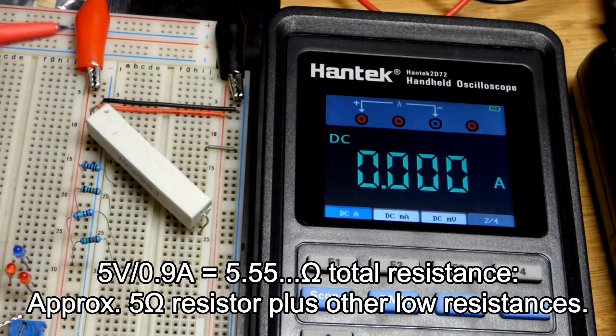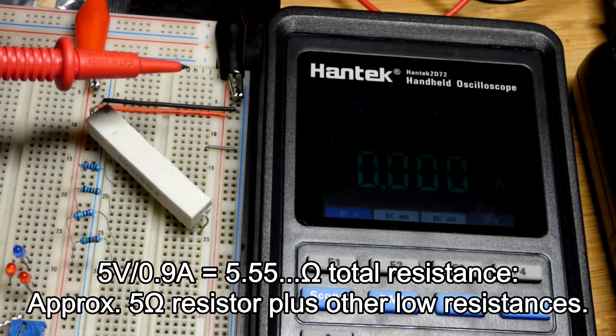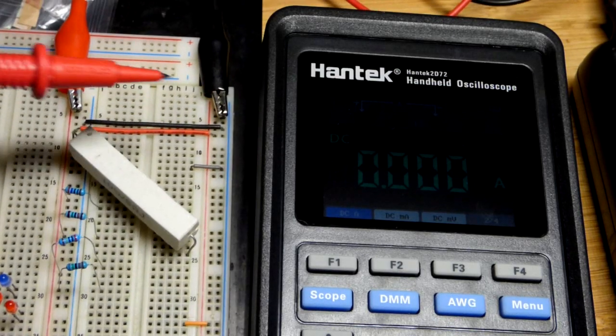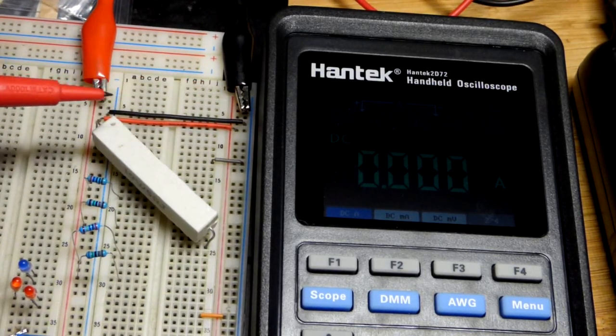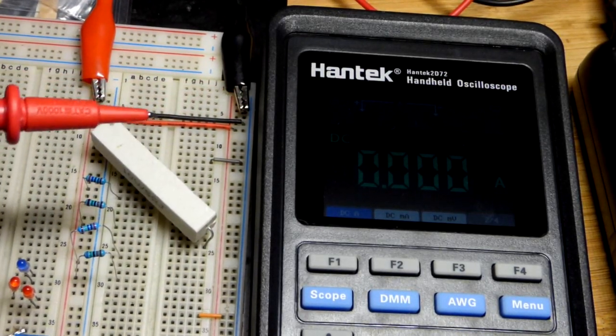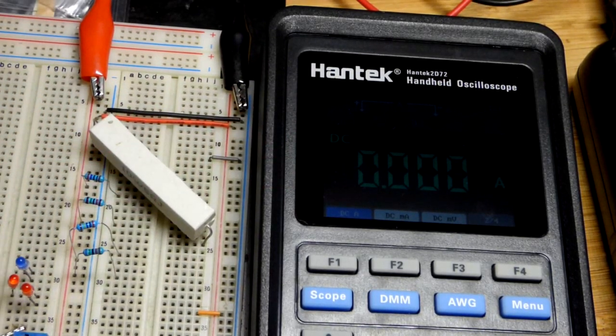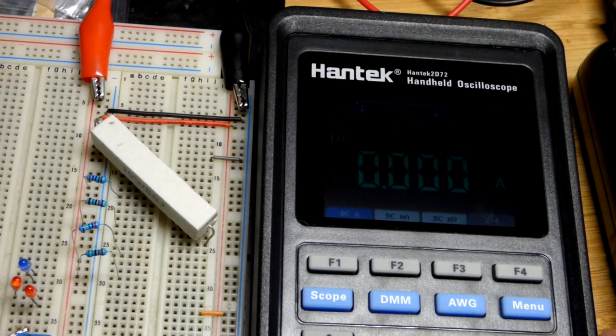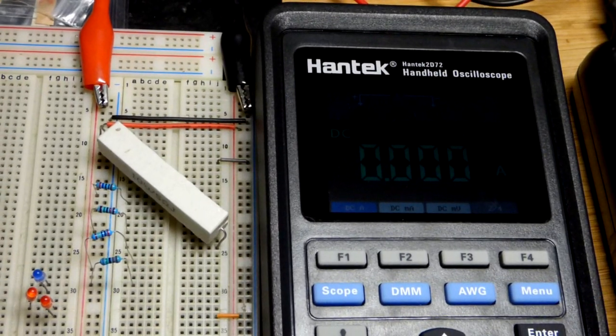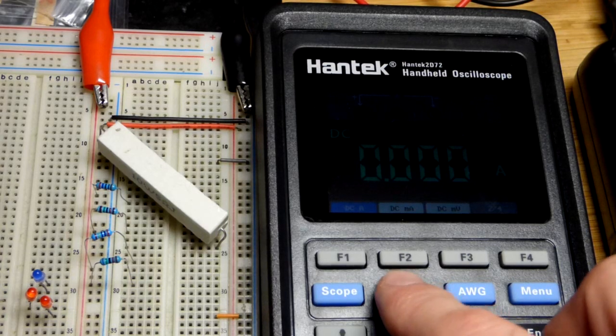But as we saw in earlier videos every time we make these connections and stuff it adds a tiny amount of resistance right there. And so probably less than an ohm I would think since this is only 5 ohms. If we were adding another ohm of resistance I think it would be below 0.8 amps. But we were a little bit above that.